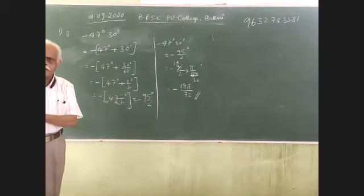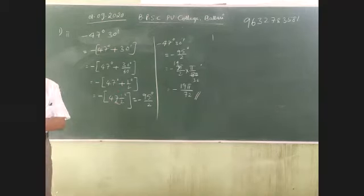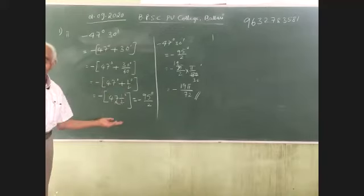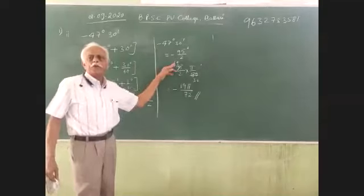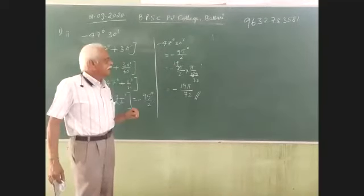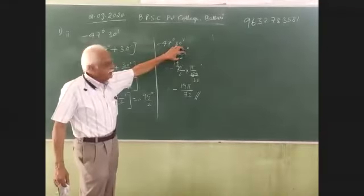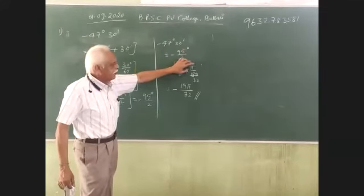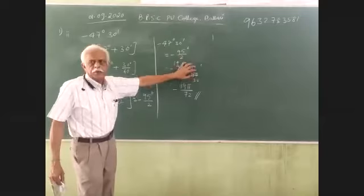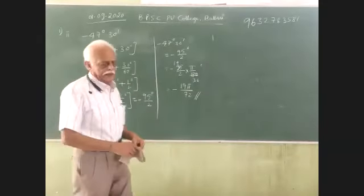Five plus half is five and a half, 10 plus half is 10 and a half, 47 plus half is 47 and a half, which is nothing but 95 by 2. So these are the given degrees. We have to convert them into radians, so multiply by π by 180. Clear?